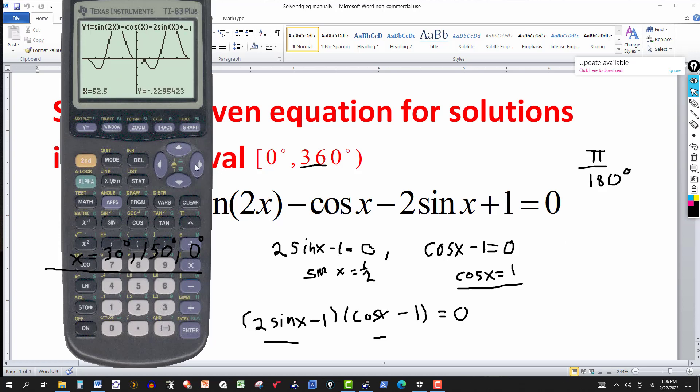And then keep going with the trace. And slow down, you get close to the x axis here. And there's the other one, 150. So 30, 150, and zero. That's what we got.